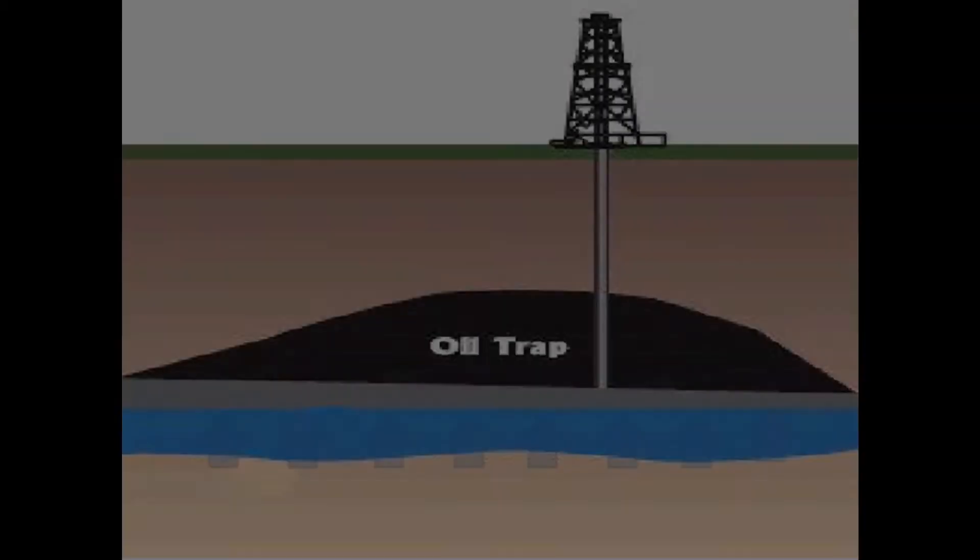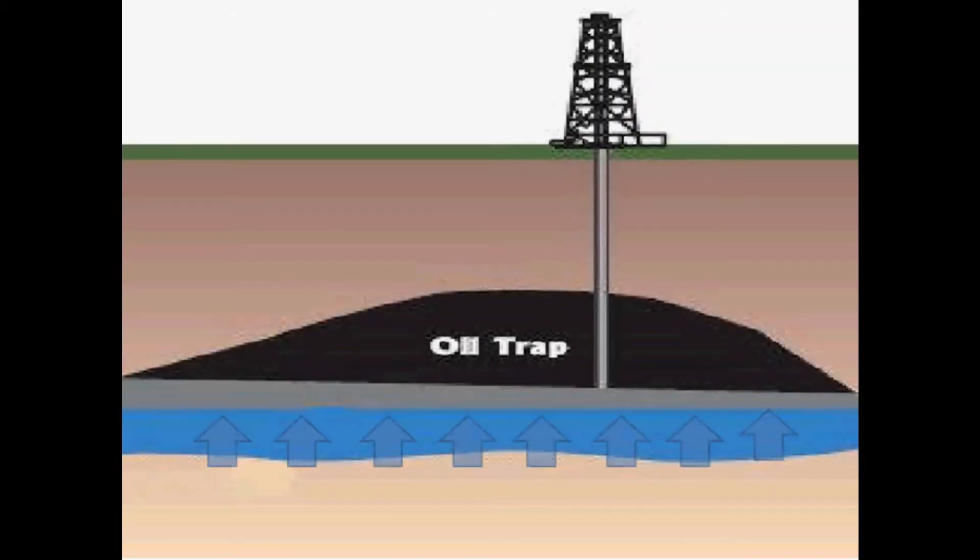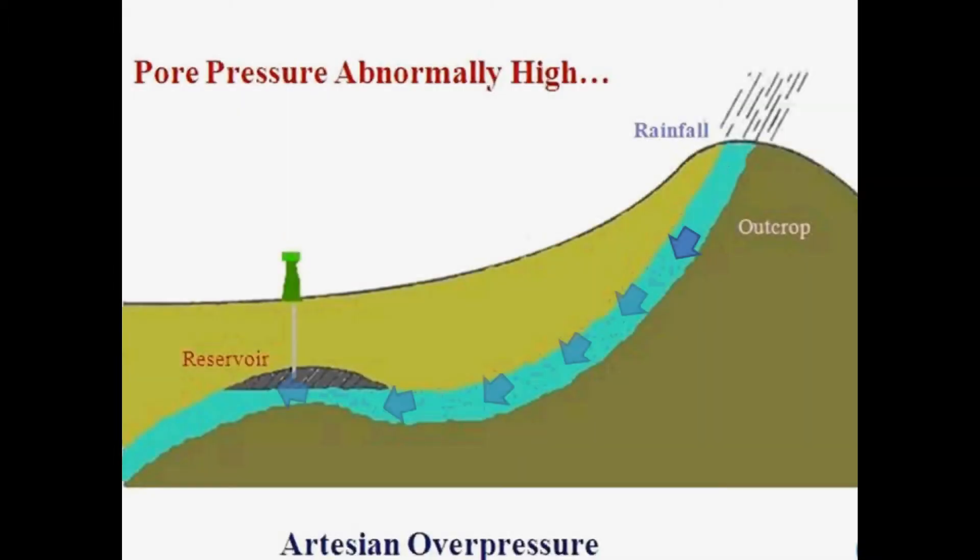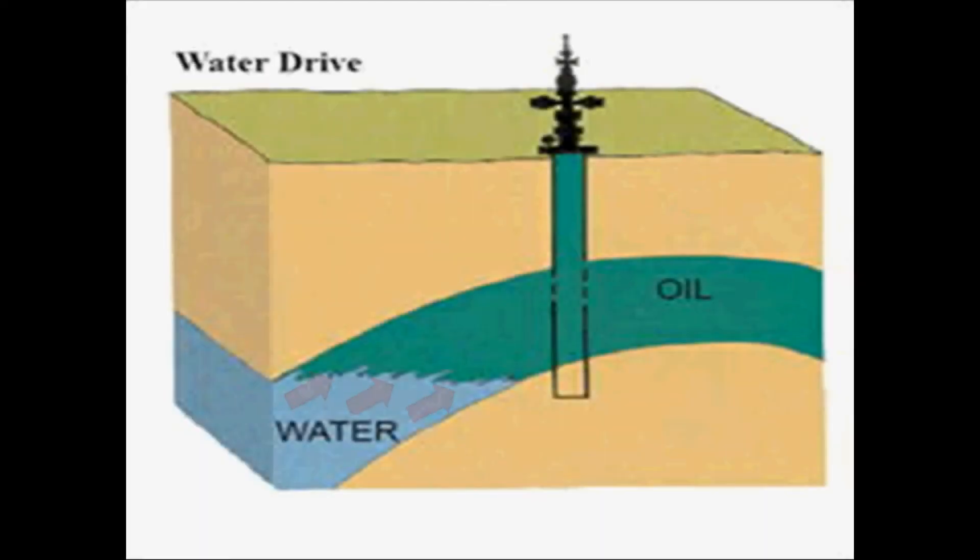Now let's look at how a water drive works. There are two possible sources for water drives. One, water coming from a column in an outcrop in a nearby mountain. Or two, any large amount of water under pressure.